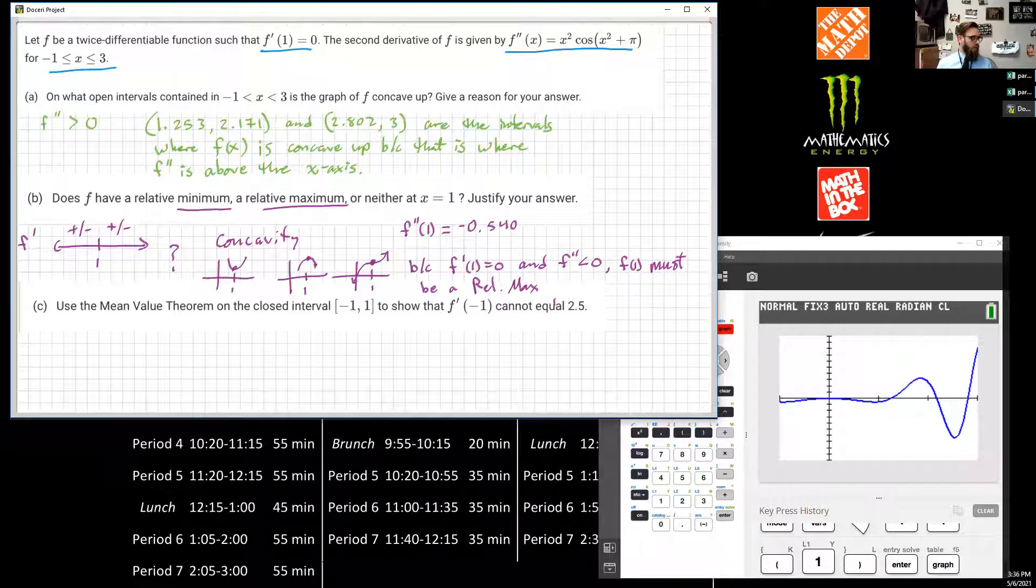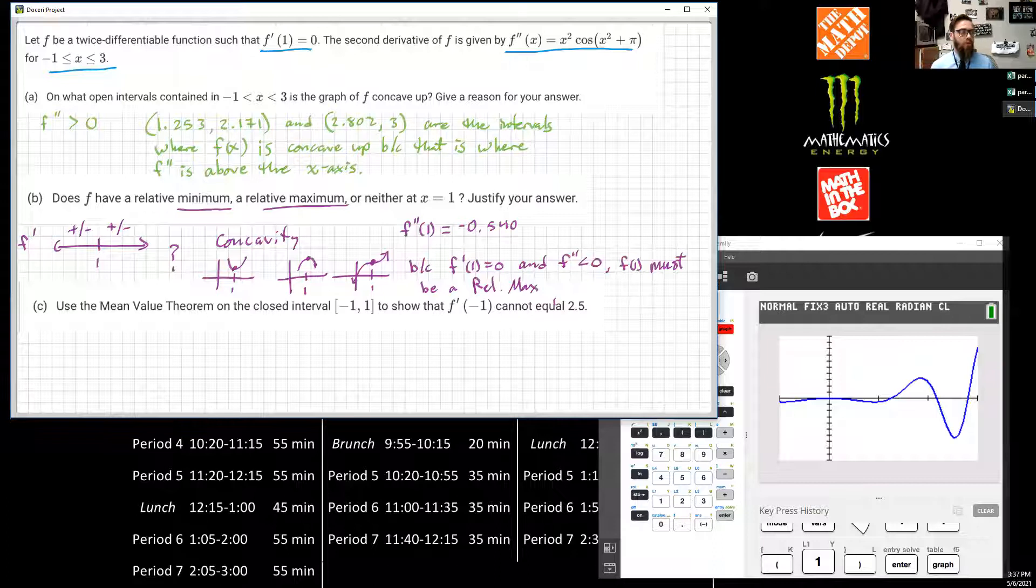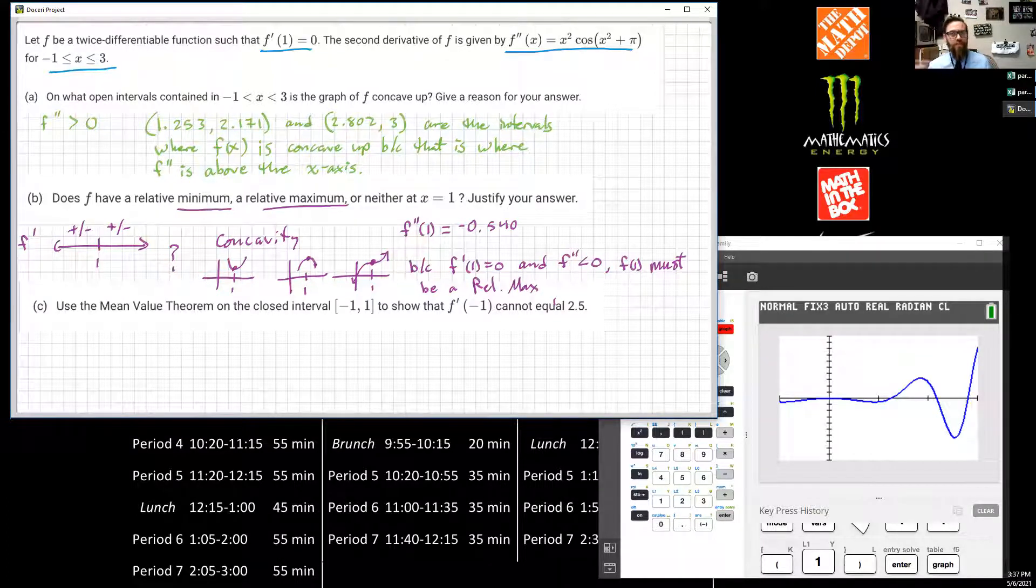Now we get to this crazy weird one right here. It says, use the mean value theorem on a closed interval from -1 to 1 to show that F'(-1) cannot equal 2.5. Now this is really weird. Seriously, if I was doing this for the first time ever, like as me right now, a calculus teacher, I probably would have been stumped on this for a second and I would have skipped it. I would have come back to it. Now it would be one that I would fumble through, but I would be able to figure out because I do know what the mean value theorem is. So let's start with that really fast.